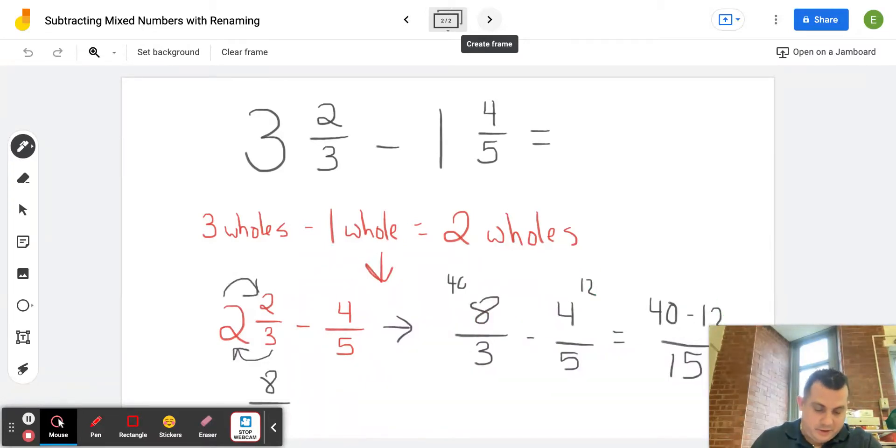Three times four is 12, so 40 minus 12. This is where I'm running out of room, so I will put this up here. 40 minus 12, that's 28.